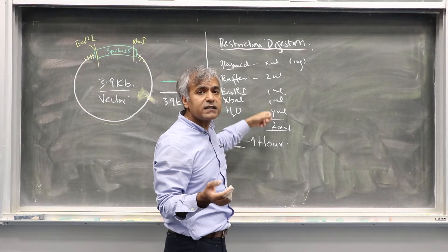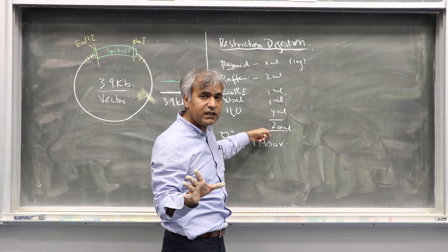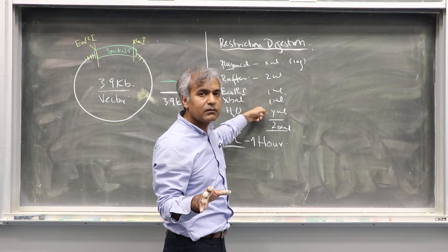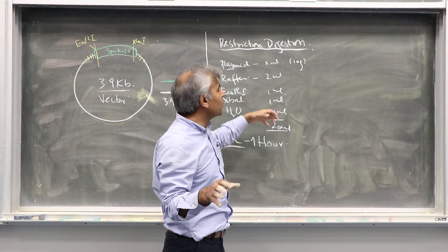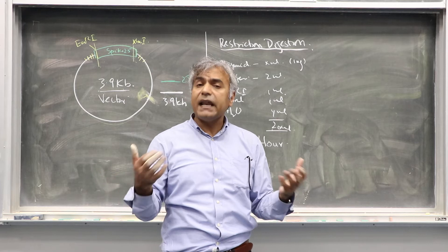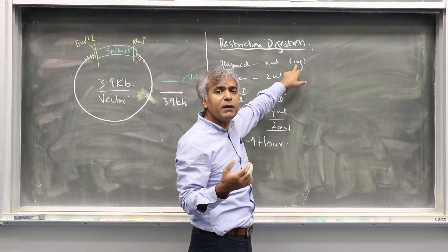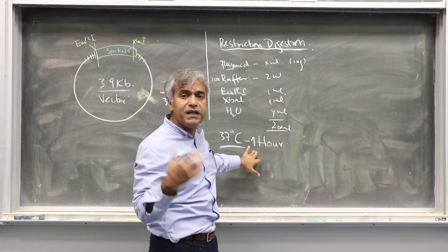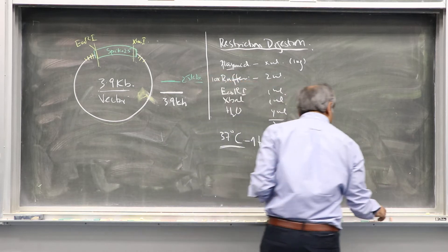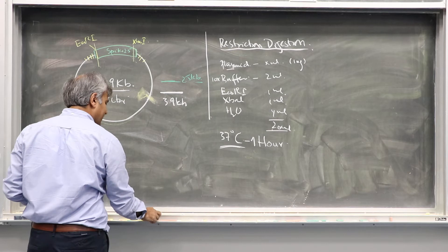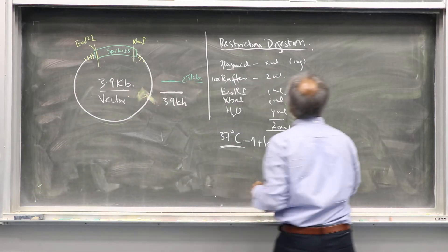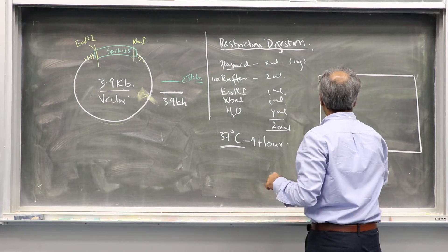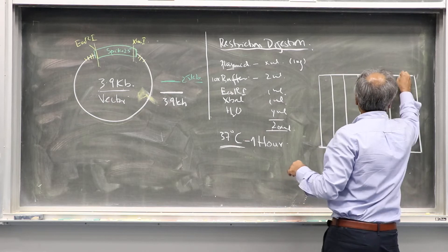Can I use 3 microliters of EcoR1 and 3 microliters of XbaI in a total reaction of 20 microliters? Also, can I use 0.5 microliters of restriction enzyme when I am using 1 microgram of DNA? When you read about the units of enzyme and the time given, you will find the real answer. After incubation at 37°C for one hour, we run agarose gel electrophoresis.